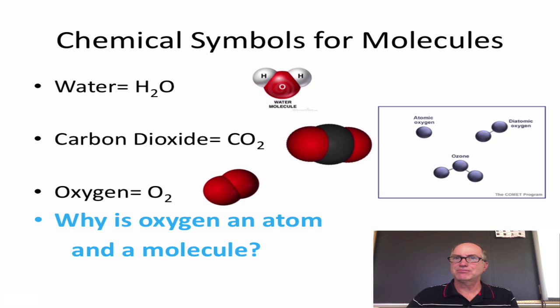But why is oxygen an atom and a molecule? That's because, if you look over here, oxygen can exist as one atom, but it doesn't like to. It likes to find other things to bond to, including itself. And so we often see oxygen in the air as O2, and sometimes three atoms of oxygen bind together, and that's known as ozone.